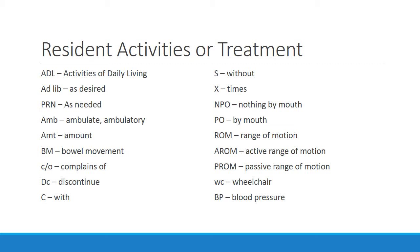X means times. NPO is nothing by mouth — you will often see this for people getting ready for surgery, such as NPO after midnight. PO means by mouth. ROM is range of motion, which is how well people are able to move their joints. AROM means active range of motion — they can move their joints themselves without help. PROM means passive range of motion, meaning you have to perform the range of motion for them. WC is wheelchair, and BP means blood pressure, which we will teach you how to measure in this course.